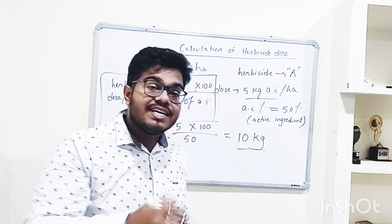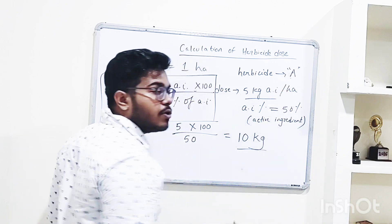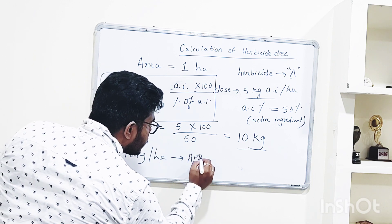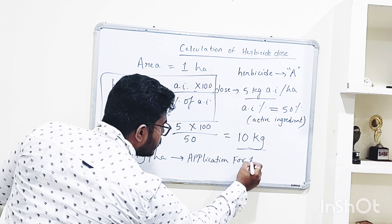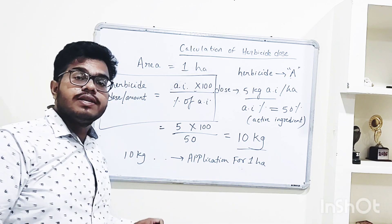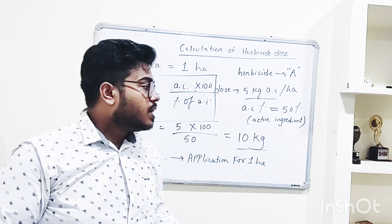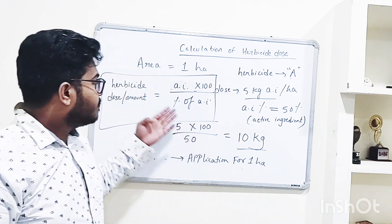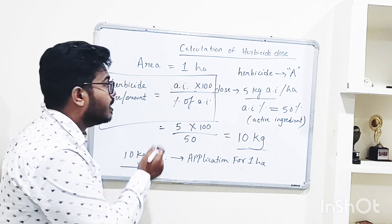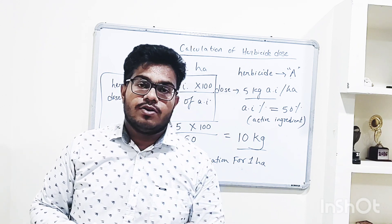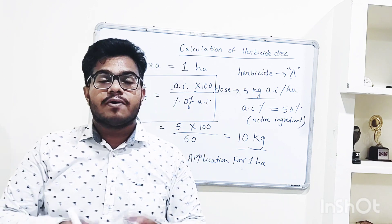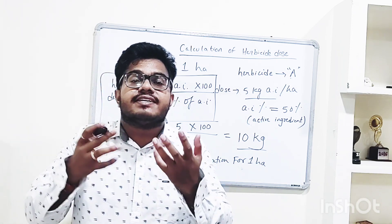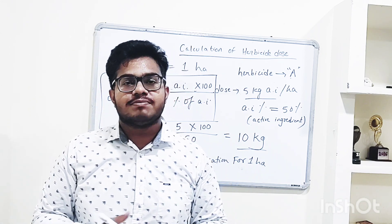So 10 kg is the amount of herbicide A that we need to apply for 1 hectare. The recommended dose is 5 kg AI per hectare with 50% AI, and using the formula we get an exact application amount of 10 kg per hectare. This is how herbicide calculation is done, and it is very important to apply the right amount of herbicide to sustain soil health and crop health. Keep watching, keep studying, and keep subscribing — thank you.